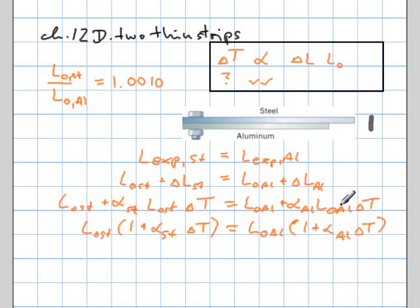And now I notice something here. Here's the length of the steel and here's the length of the aluminum both factored out. So if I get one to the other side, I can readily introduce that factor here 1.0010 by how much the steel is longer than the aluminum. And then I truly just have one variable.